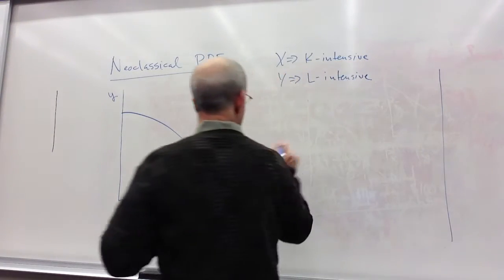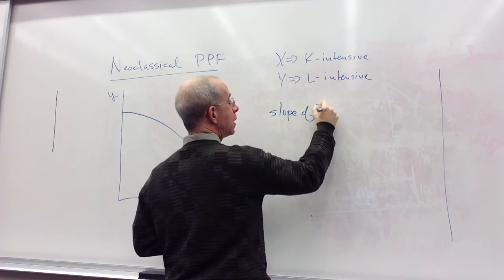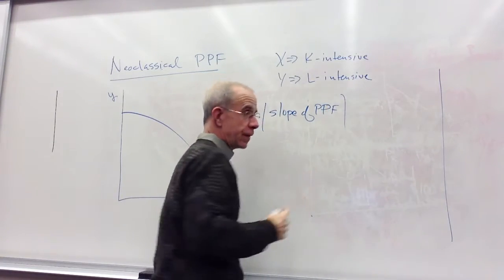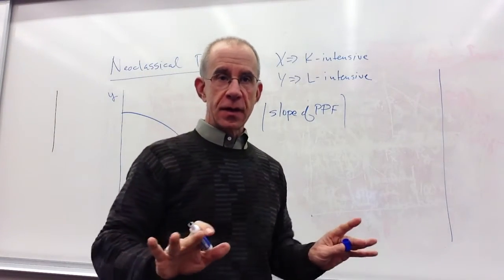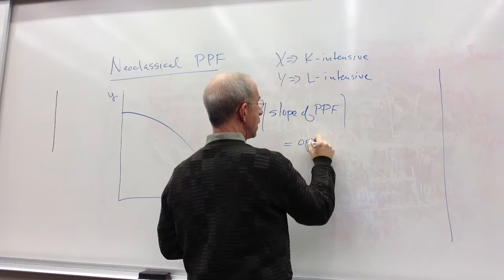Now if you recall, the slope of a PPF, the absolute value to be more careful, in general, in everything that we're going to do, the slope of the PPF is the opportunity cost